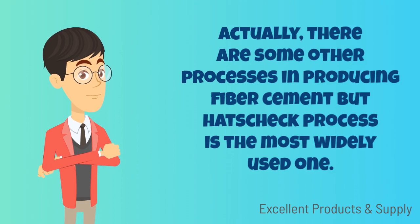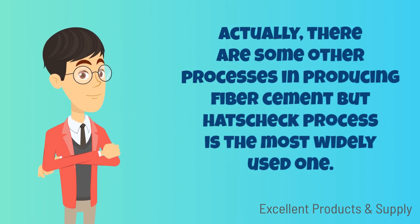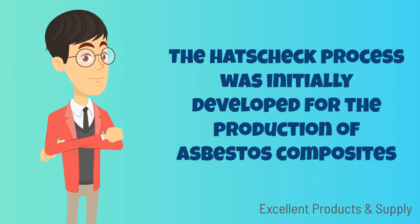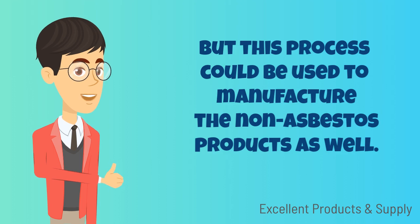There are some other processes in producing fiber cement, but the Hatschek process is the most widely used one. The Hatschek process was initially developed for the production of asbestos composite, but this process could be used to manufacture non-asbestos products as well.